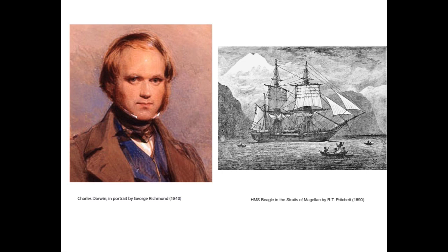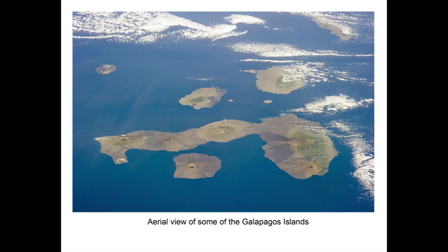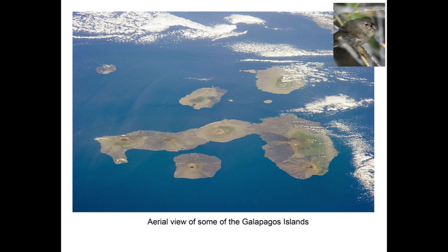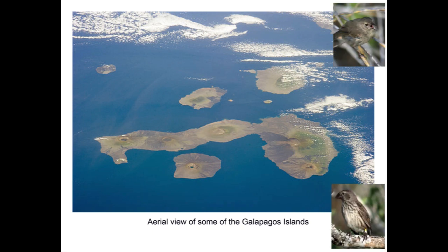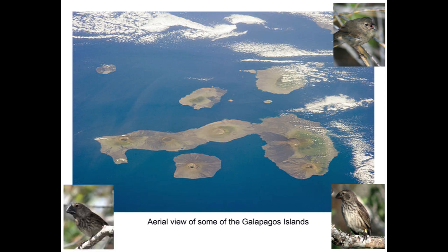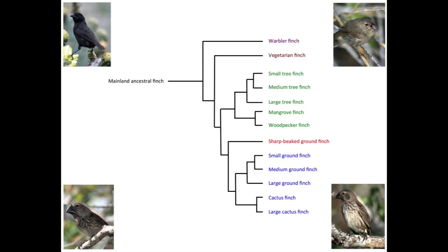From 1831 to 1836, Charles Darwin traveled the world aboard the HMS Beagle, making many observations about the plants and animals that he encountered. Darwin's observations of birds on the Galapagos Islands off the coast of South America are particularly well known. At least 13 species of finches live on the Galapagos Islands. These birds have been grouped into species based on beak size and shape, feeding habits, and breeding behavior. As Darwin originally suggested, the many types of finches living on these islands are believed to have evolved from a common ancestor species that arrived from mainland South America, as shown in the tree.